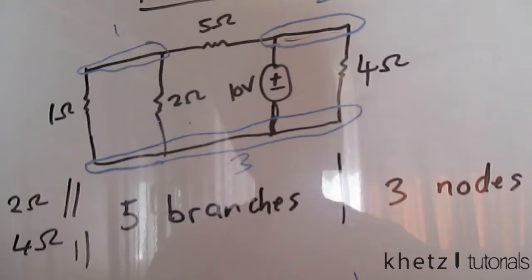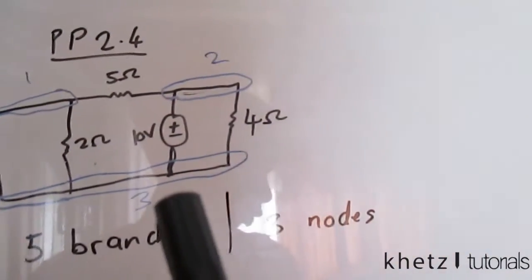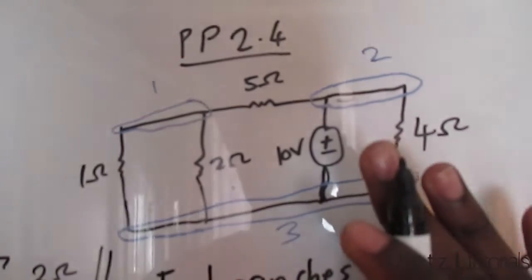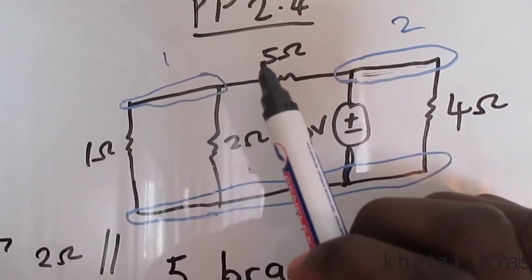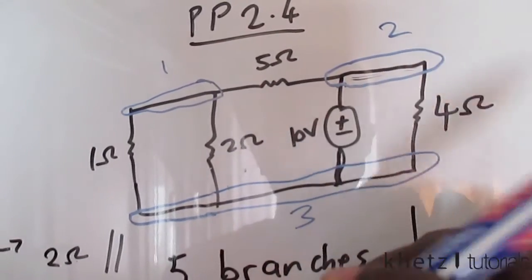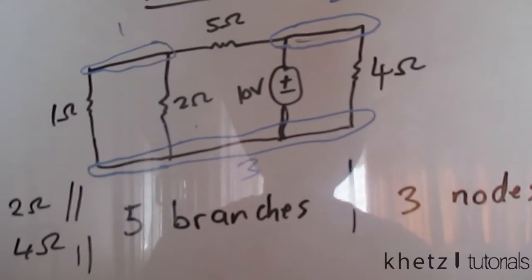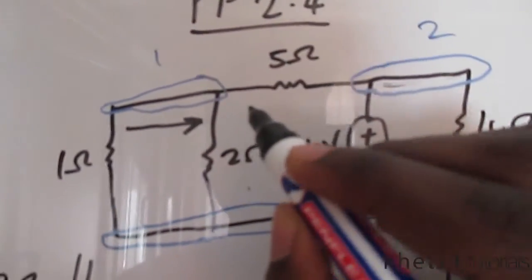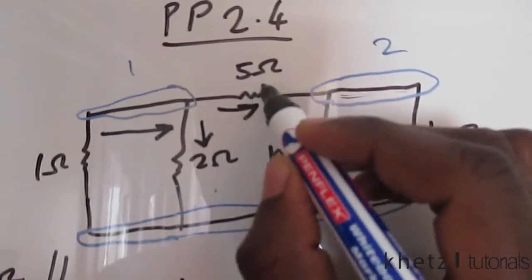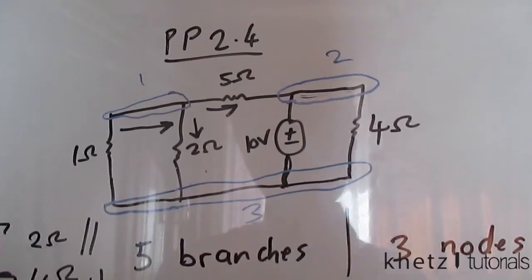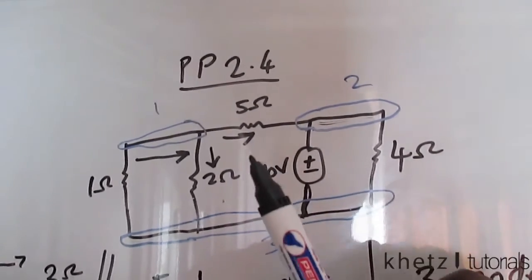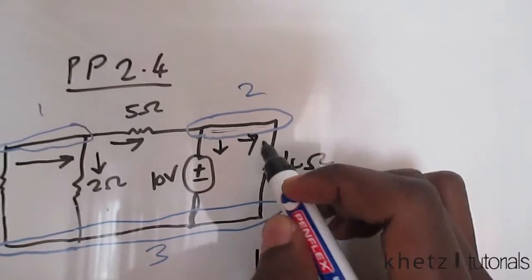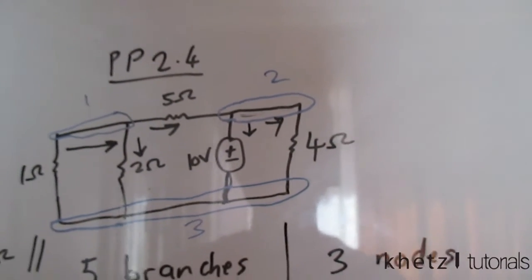Looking for other connections, none of them qualify as purely series. For elements to be in series, they must share the same current. If there's a current coming through here, it will split into this way and that way, so these two elements will have different currents — which violates the rule of a series connection. So the 2 ohm and the 5 ohm are not in series. The same applies for the voltage source: at that point there'll be different currents split into those two parts, so different currents means it can't be a series connection.